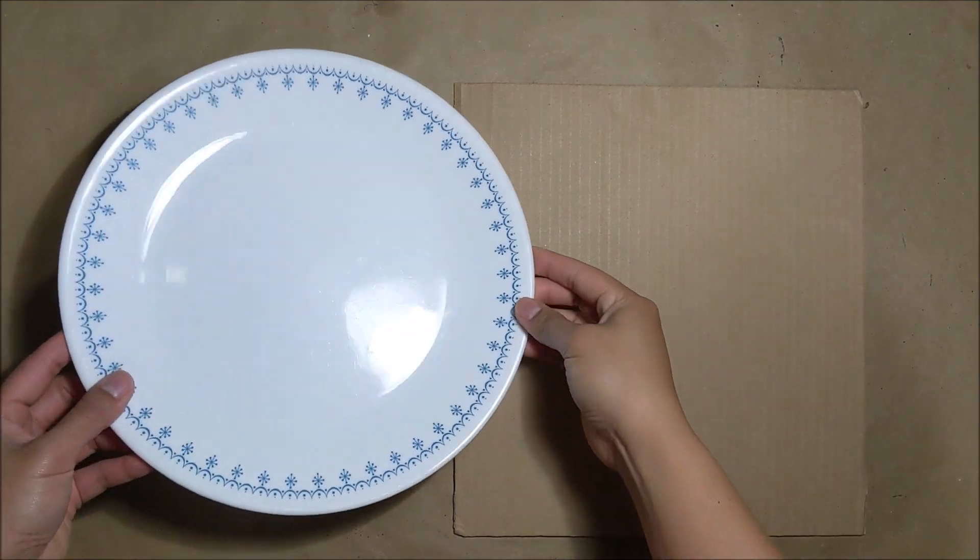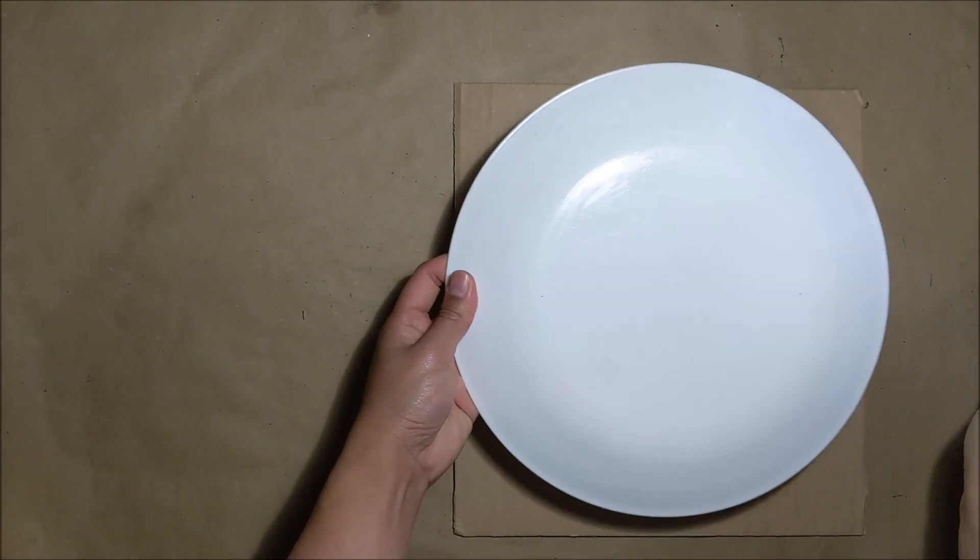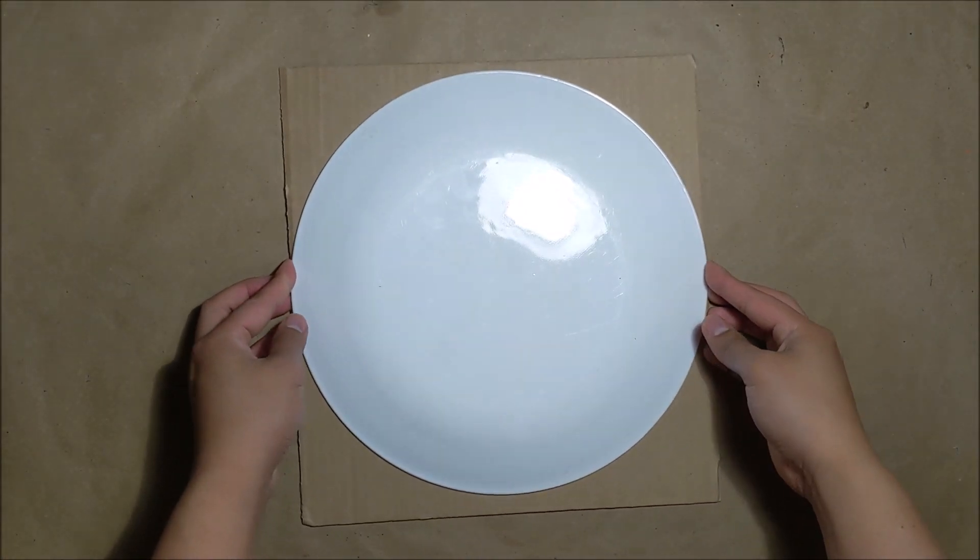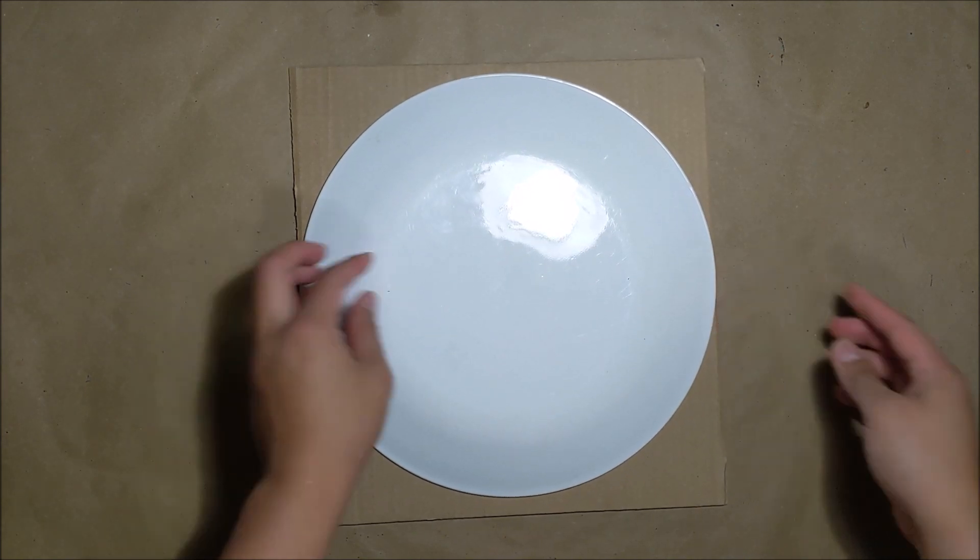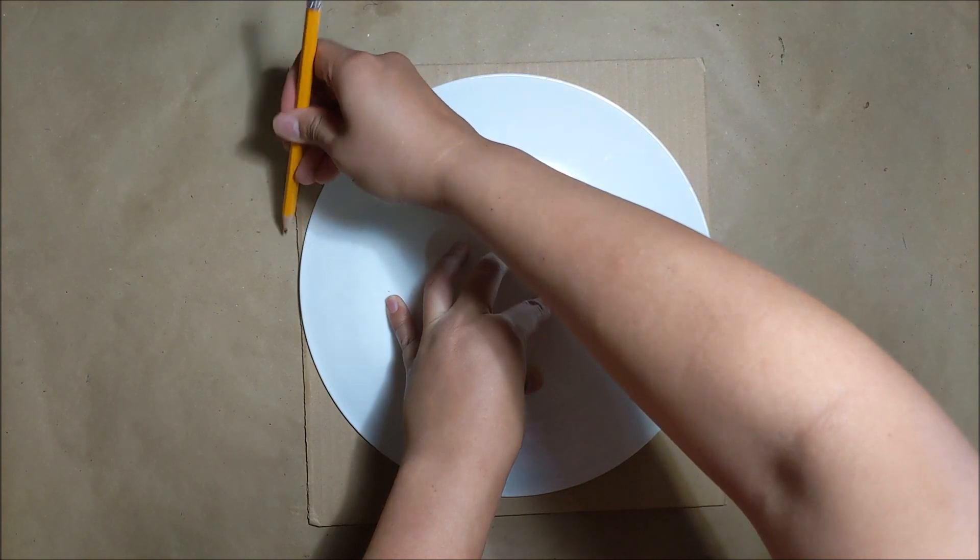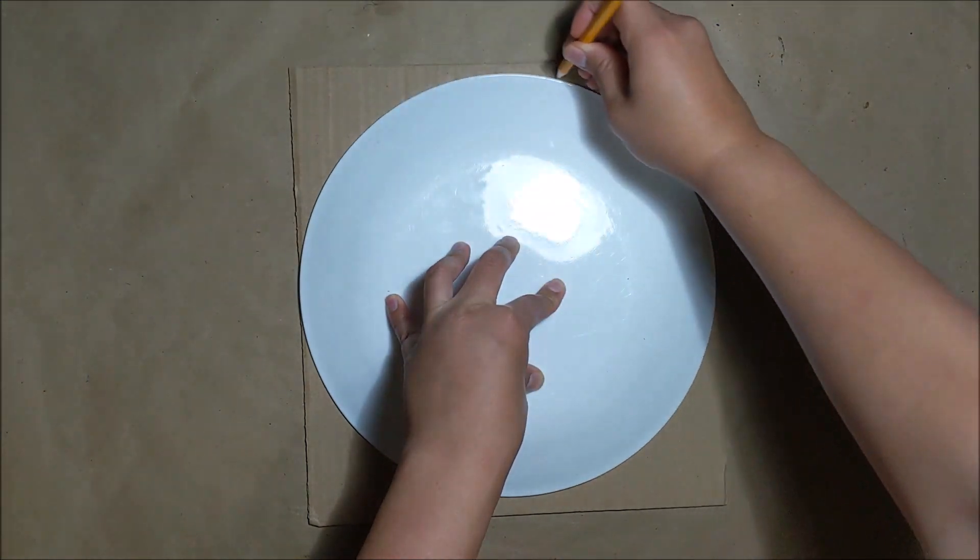First we need to make our crust. Here is my round tracer. I just used a large plate. Just make sure your cardboard is big enough to fit your plate. Here I'm just tracing around my plate to get that circle.